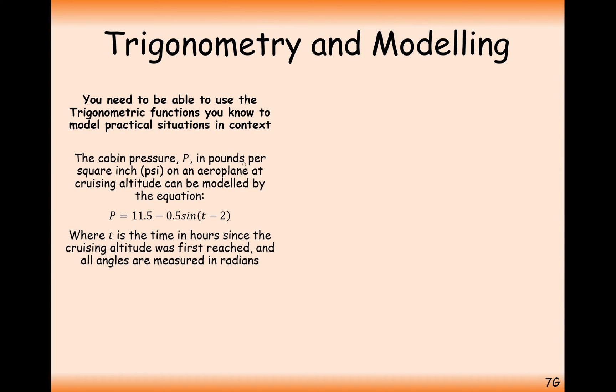The cabin pressure P in pounds per square inch on an aeroplane at cruising altitude can be modelled by the equation P equals 11.5 minus 0.5 sine T minus 2, where T is the time in hours since the cruising altitude was first reached and all angles are measured in radians. Make sure your calculator is in radians for this question.